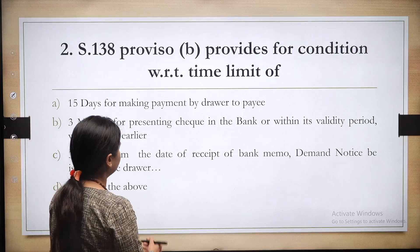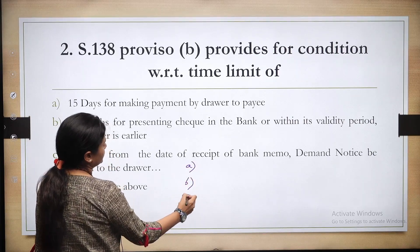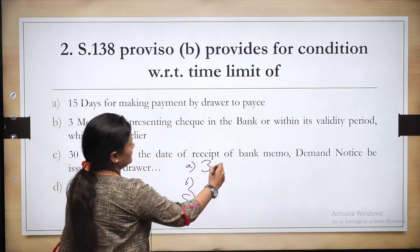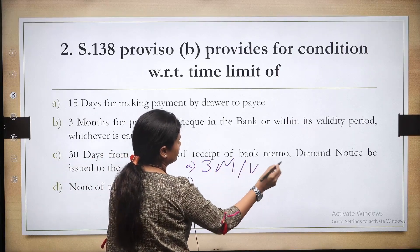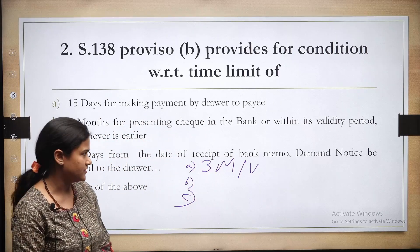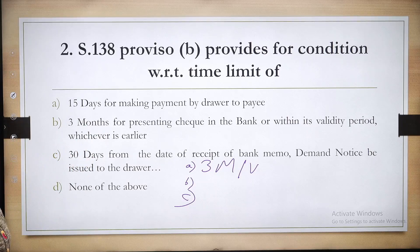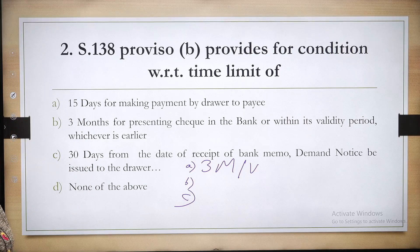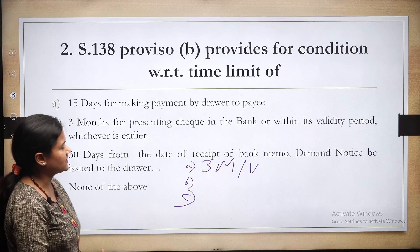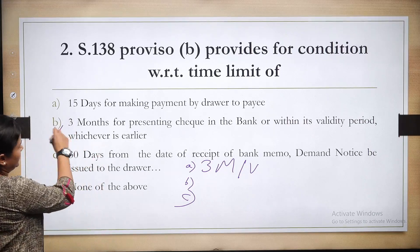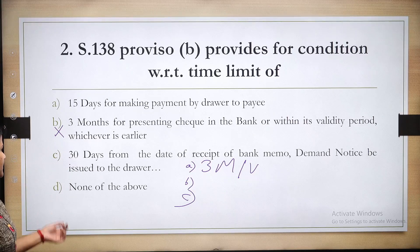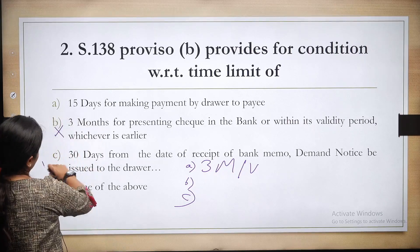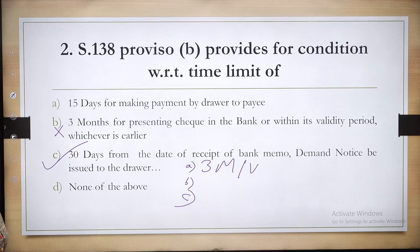Second question: Section 138 Proviso B provides for the condition with respect to the time limit. Section 138 has three provisos: A, B, and C. Proviso A states that the check must be presented to the bank within three months or within its validity period, whichever is earlier. The correct answer is option C — 30 days from the date of receipt of the bank memo demand notice to be issued by the payee.